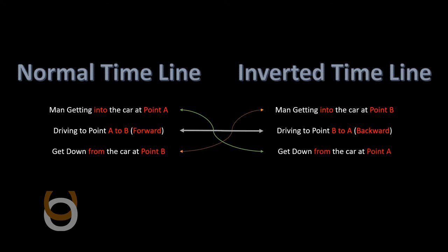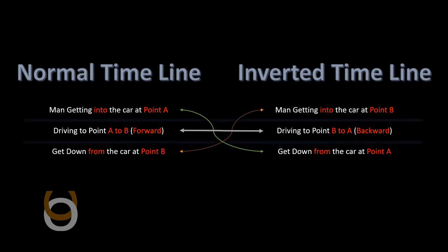Now comes the tricky part. Think of these two timelines playing at the same time. When one man moves forward, the other one will move backward — these two events happen simultaneously. Since the end of the normal timeline is the beginning of the inverted timeline, the two timelines will meet only one time.